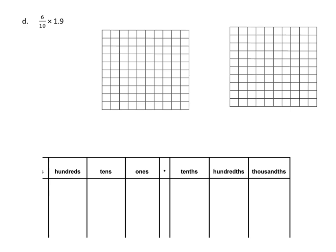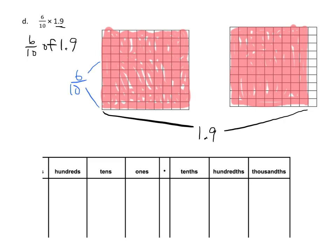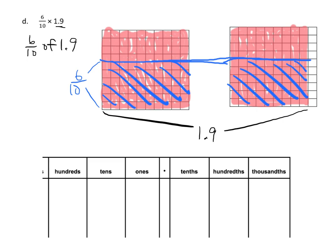So on this one, we've got the number 1.9. We're going to find 6 tenths of 1.9. First, let's draw a picture of what 1.9 would look like. Through the magic of video editing, we can see that 1.9 is right here — it is an entire whole shaded in, and then 9 out of the 10 columns over here. Now 6 tenths means we need 1, 2, 3, 4, 5, 6 — so 6 tenths is right here. So that's all of this — 6 tenths.